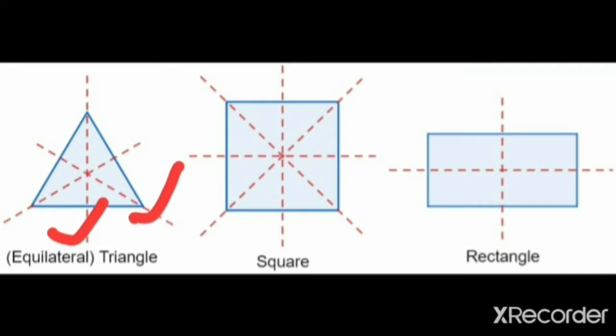What about a square? A square has four lines of symmetry: one, two, three and four.